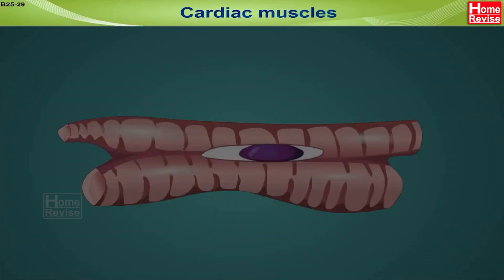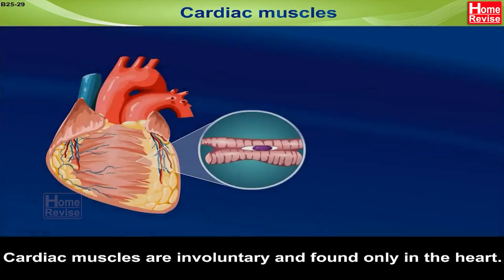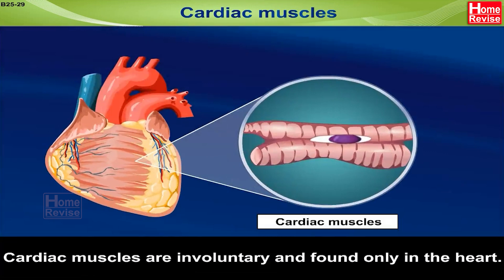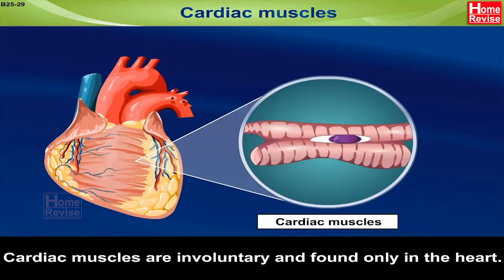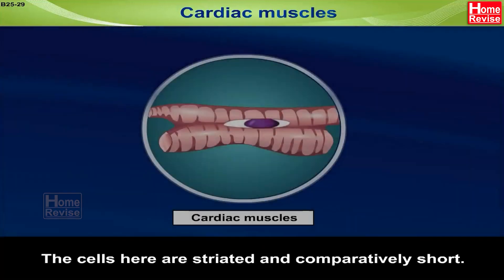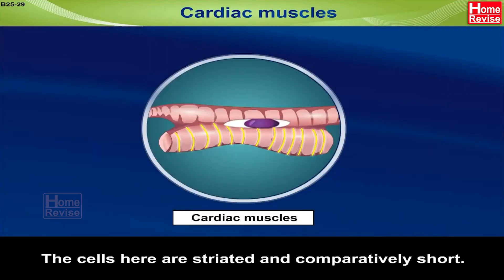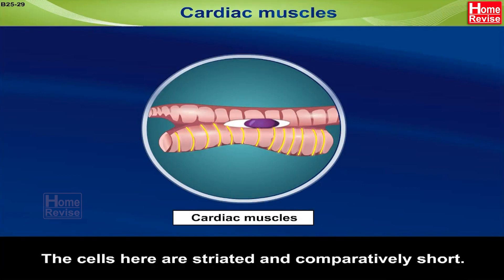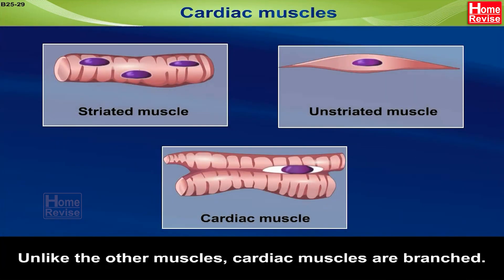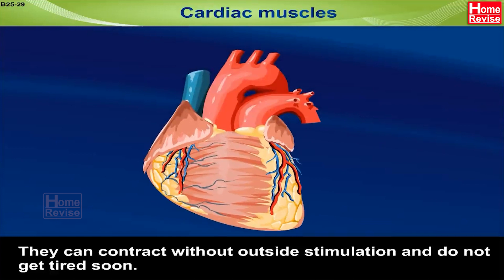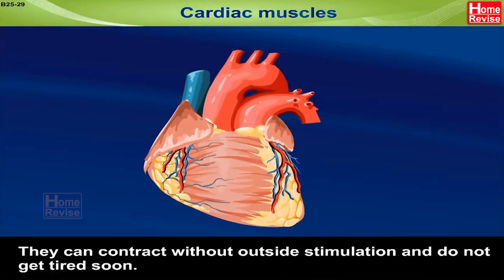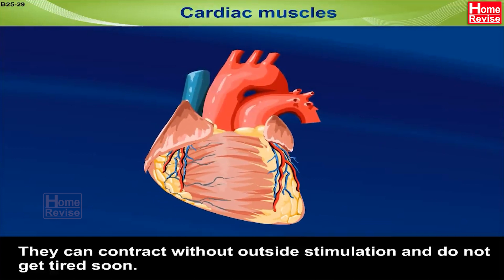Cardiac Muscles: Cardiac muscles are involuntary and found only in the heart. The cells here are striated and comparatively short. Unlike other muscles, cardiac muscles are branched. They can contract without outside stimulation and do not get tired soon.